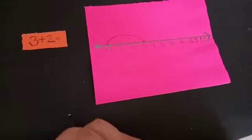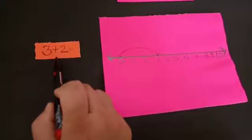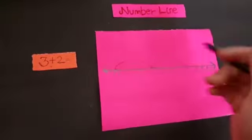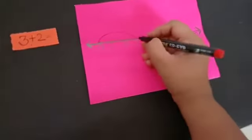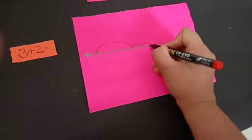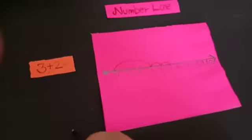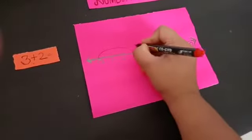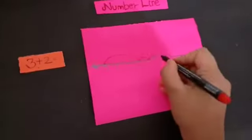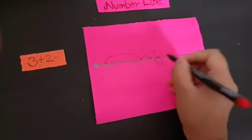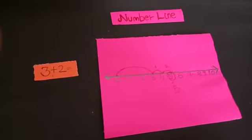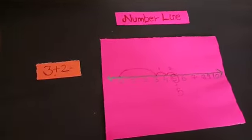Now how many numbers we have to add? We have to add 2 numbers. So 2 more numbers we will jump. How many numbers did we jump? 1, 2. At what number we came? We came at 5. So what is the answer? Our answer is 5.